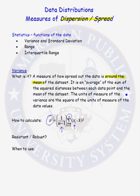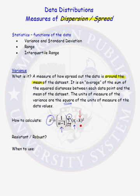The units of measure of the variance are the square of the units of measure of the data values. Is the variance a resistant or robust statistic? The answer is no, because when we calculate the sample variance, we use the sample mean in our calculation, and the sample mean is not a resistant statistic. So the sample variance is not a resistant statistic.